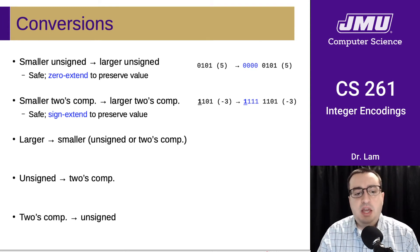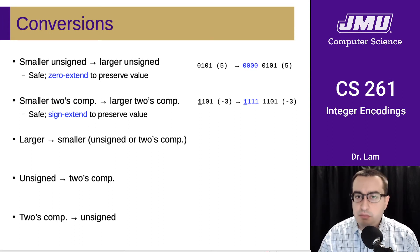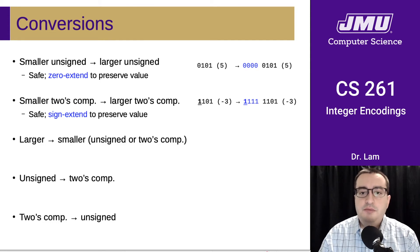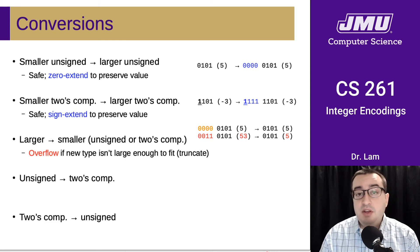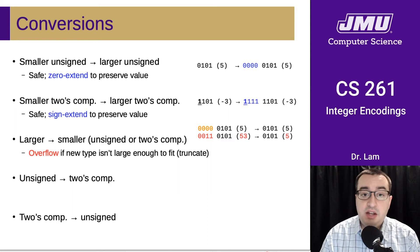So what about going from a larger number to a smaller number? So from eight bits to four bits. And hopefully with a little bit of thought, it's relatively intuitive that this is not going to be safe using either unsigned or two's complement. Basically, if you have a number that doesn't fit inside the smaller format, you're going to have an overflow. You're going to have to lose some bits. So there are some values that you can represent using the larger format that you just cannot represent using the smaller format.